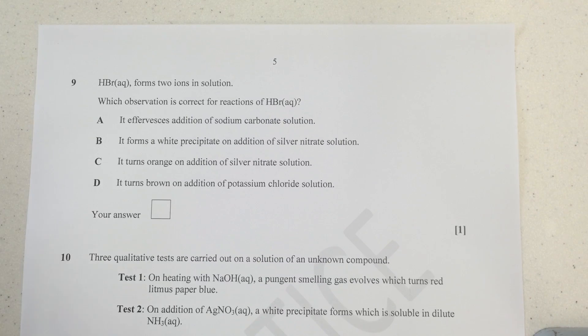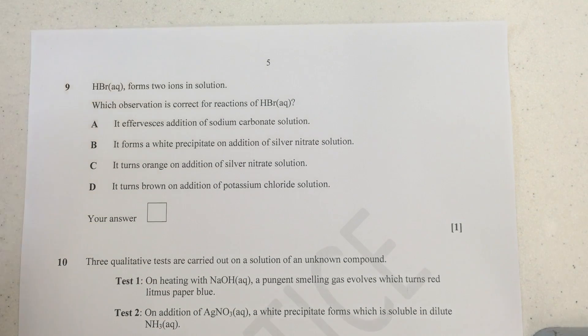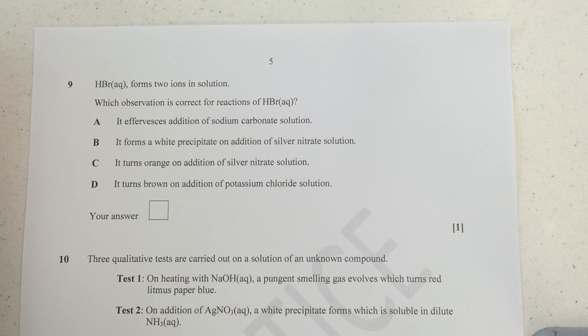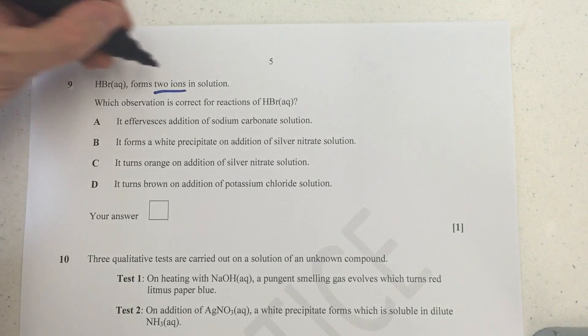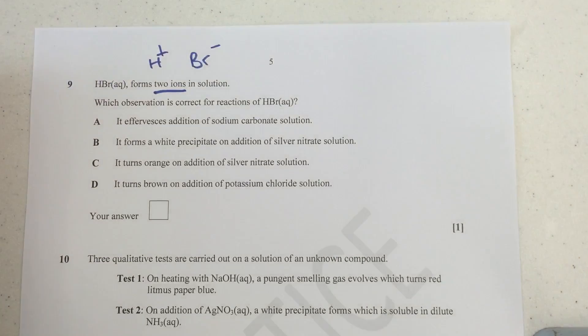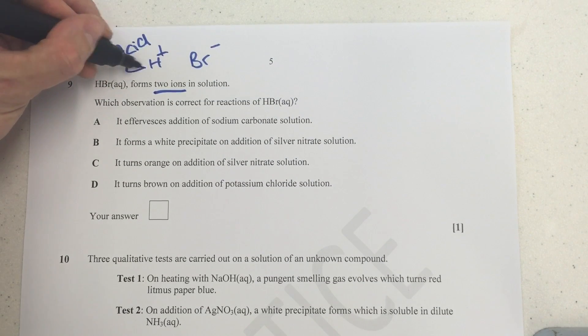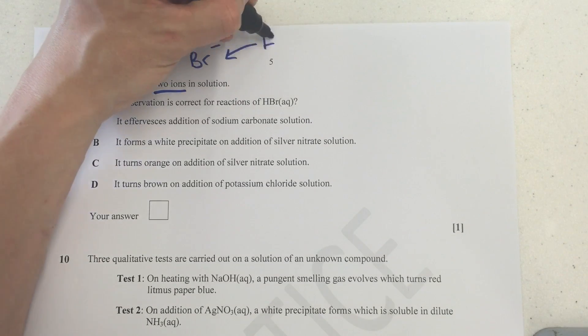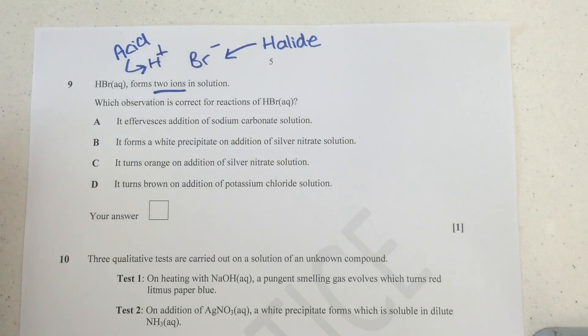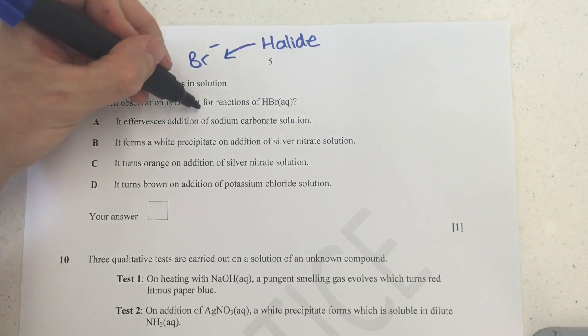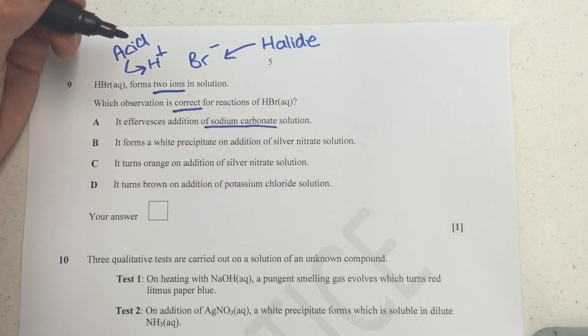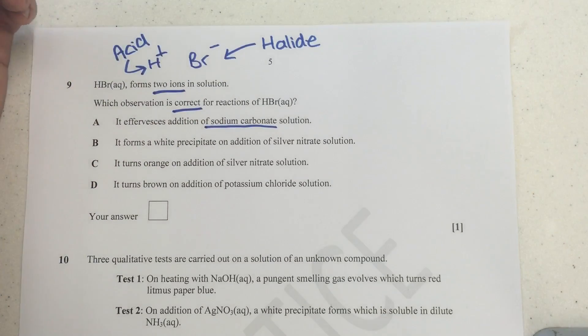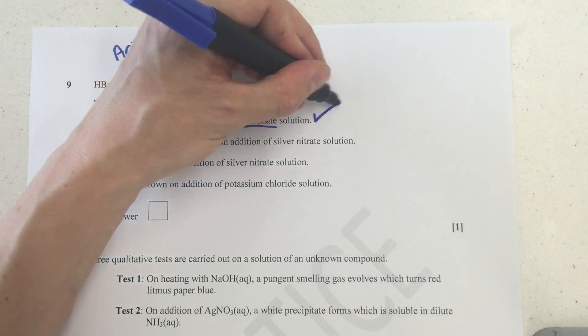Next question. Question 9. So for question 9, a bit of a weird one here because you're actually told to think of HBr as an acid, but you're not going to see this anywhere in the spec. It's not something we consider or that we study. So what we've got here to begin with is we are told it forms two ions. So what that means is the two ions from HBr have got to be, from our experience, H+ and Br-. Now what we've got then is an acid feature because all acids are proton donors. So they release H+ ions. And here we've got a halide ion. So what can we see here? Which observation is correct for reactions of HBr aqueous? So first thing we can say, it effervesces with addition of sodium carbonate solution. Well, sodium carbonate is used to detect H+ ions.